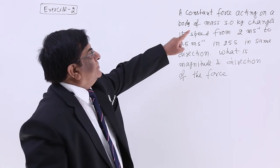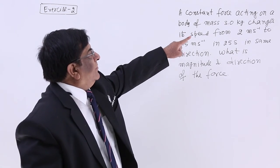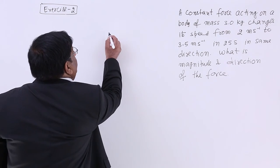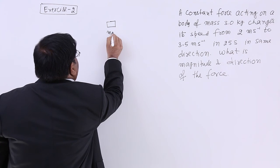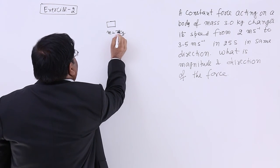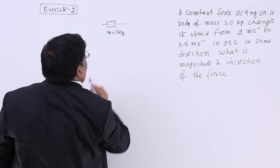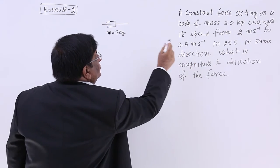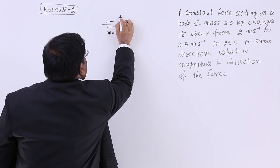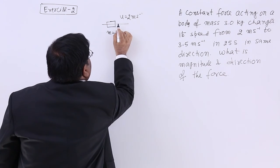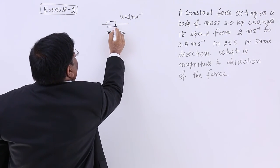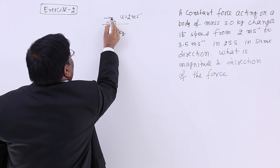Here is a question: a constant force acting on a body of mass 3 kg. Here is a body of mass 3 kg. It is moving. Its velocity is 2 meter per second. And because of this force, a force is applied here.